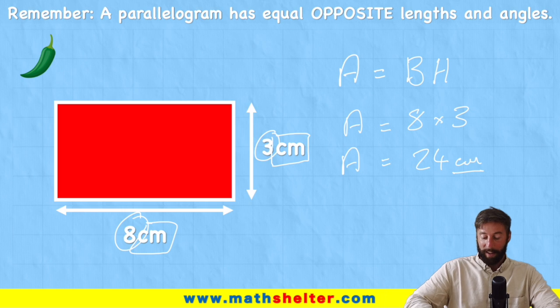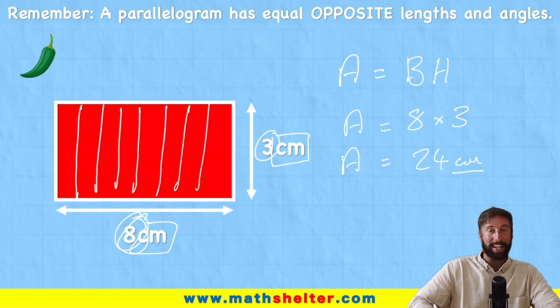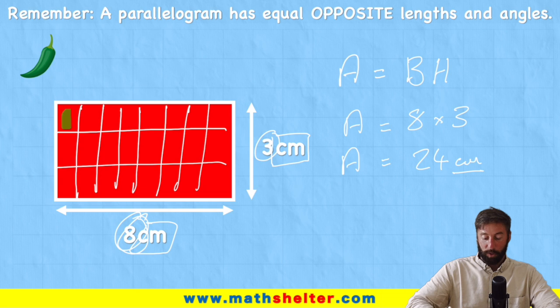And in this case I would have 8 columns. So 1, 2, 3, 4, 5, 6, 7, 8. And 3 rows. 1, 2, 3. Now what we should find now is if I count all these individual squares.